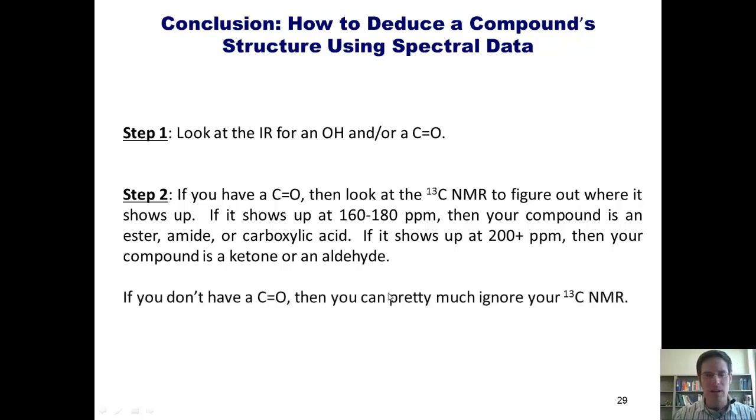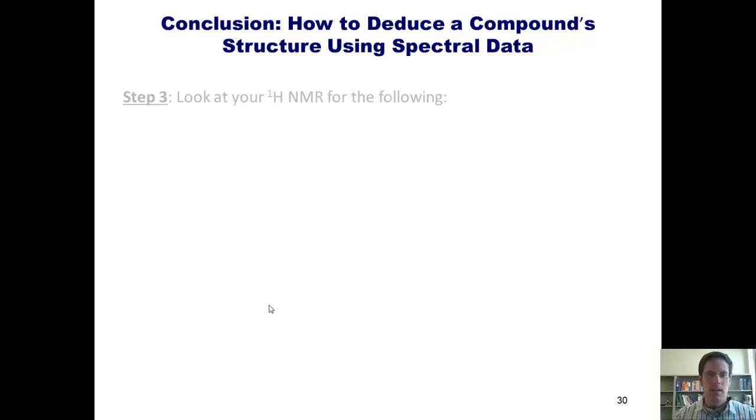Now if you don't have a carbonyl, so if you look at your IR and don't see a carbonyl anywhere, then you can pretty much ignore your carbon NMR because it's not going to tell you anything useful, generally speaking, that you can't already figure out from the hydrogen NMR. Step three, look at your hydrogen NMR for the following.